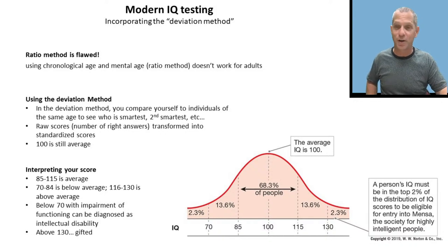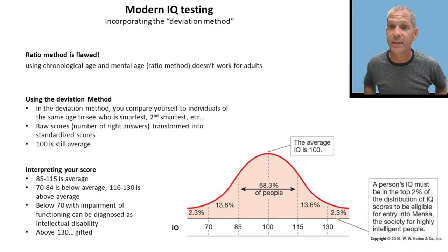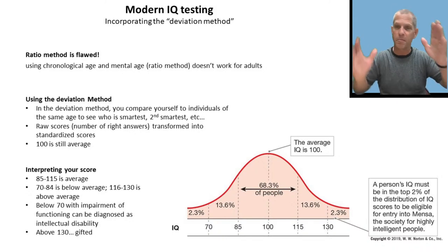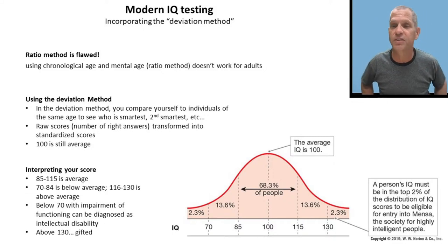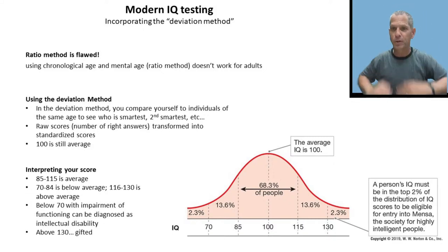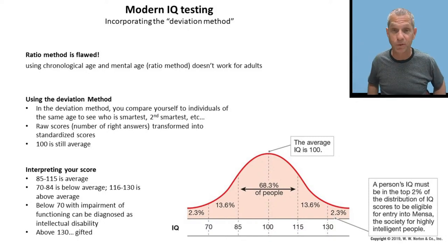Leanne remembers that curve from the math distribution. It turns out a lot of human qualities follow this sort of distribution. Personality tests show this same distribution — most of us are in the middle on extroversion, with a few extreme extroverts and a few extreme introverts. Weight, height, shoe size — they all follow this normal distribution.